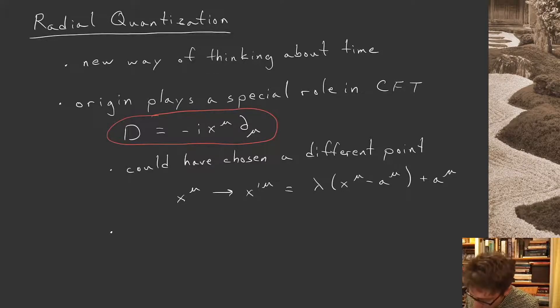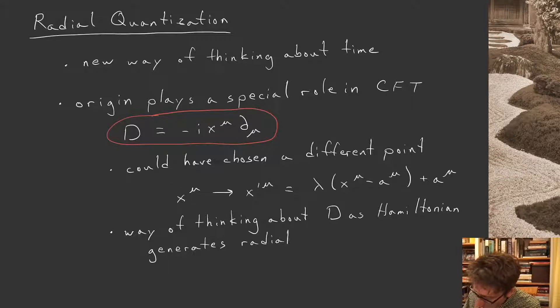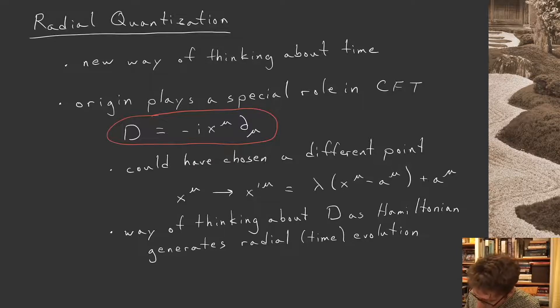Now, what I'd like to show you today is that there's a way of thinking about D as a Hamiltonian, which generates time evolution, except our time now is the radial coordinate. So it's going to generate not quite time evolution, but radial evolution, evolution in the radial coordinate.